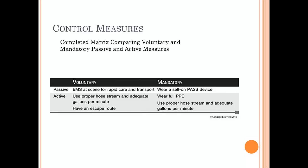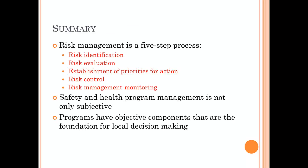In summary, risk management is a five-step process: risk identification, risk evaluation, establishment of priorities for action, risk control, and risk management monitoring. Safety and health program management is not subjective — we must do it for everybody and it should be part of our culture and department. Programs have objective components that are a foundation for local decision making, and most departments and cities will invest in safety programs when shown the data proving they can save money by reducing injuries.